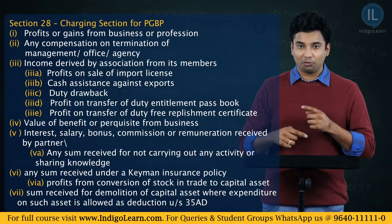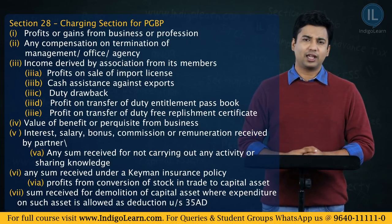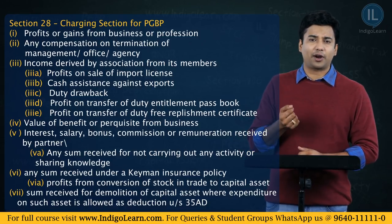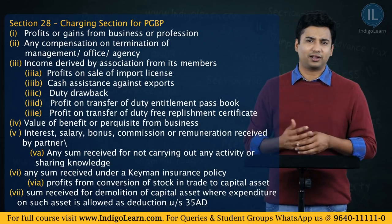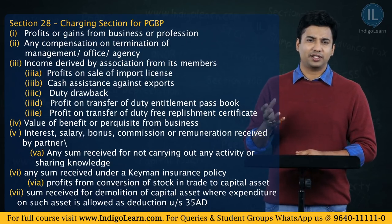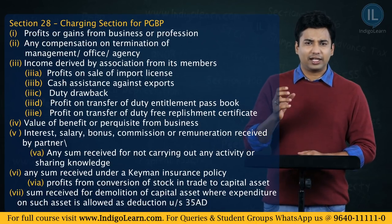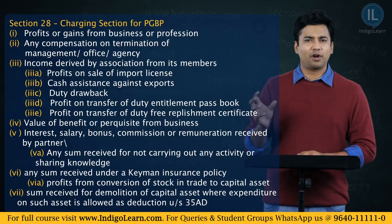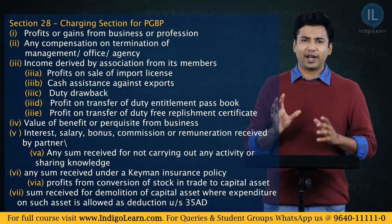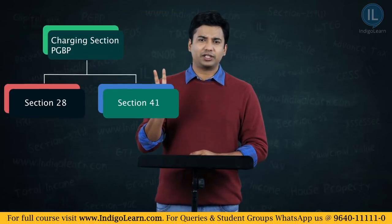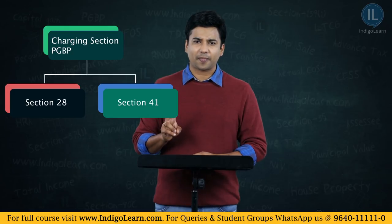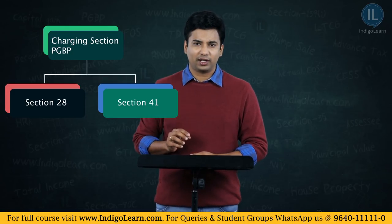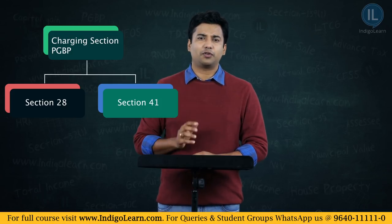Are you saying there is more than one charging section? Yes. There is another section — section 41 — which I will come across later on. I like to call it the deeming section, or secondary charging section. So there are two sections in PGBP which help us determine what income is to be included: section 28 and section 41.